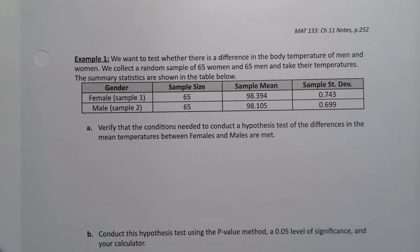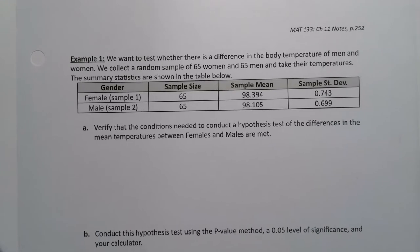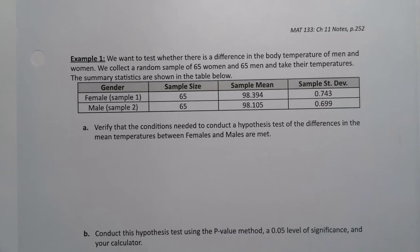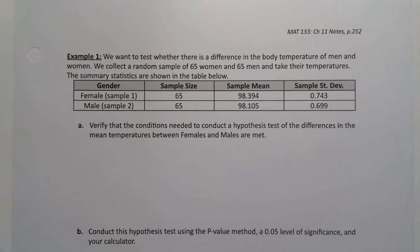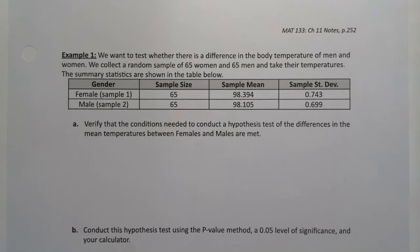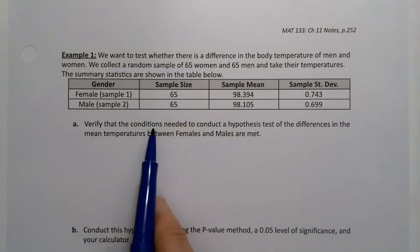Let's do a hypothesis test. We want to test whether there is a difference in the body temperature of men and women. We collect a random sample of 65 women and 65 men and take their temperatures. This is real data — it has actually been studied over the last 20 to 30 years. Intriguingly, there's evidence that average body temperature is shrinking in industrialized countries with good medical care.